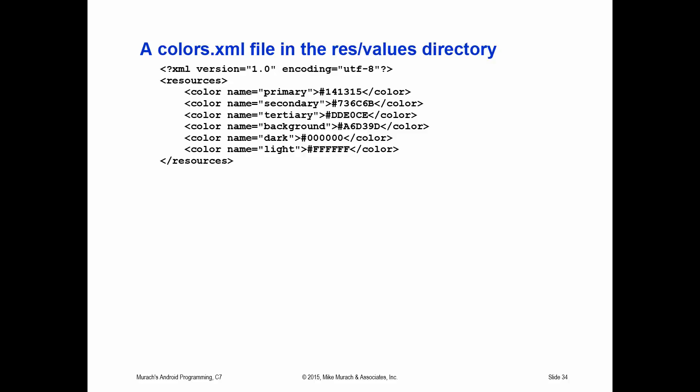The last part of the chapter, pages 222 and 223, covers working with colors. It's generally considered a best practice to begin by adding a colors.xml file in your res/values directory. You add color elements for each color you want to define, using the name attribute to specify a name like primary, secondary, tertiary, background, dark, and light. These colors provide a color scheme for an app. Within the body of the color element, you can use a hex value to specify an RGB value for the color — similar to how it's done in HTML and CSS.